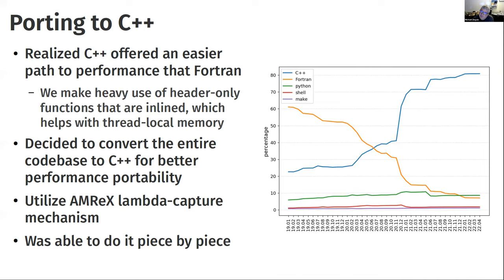A graph shows C++ lines growing from January 2019 through April of the current year — there was a big push over a holiday break. Castro is now effectively all C++; the few remaining Fortran bits aren't actually used. When compiling, only C++ is compiled, allowing full use of all the new data structures and launch mechanisms that AMReX provides.